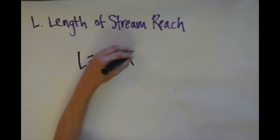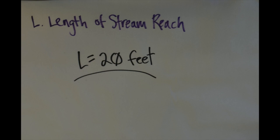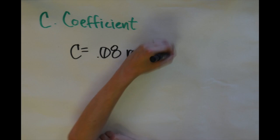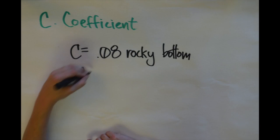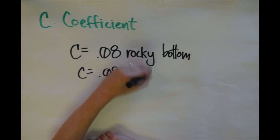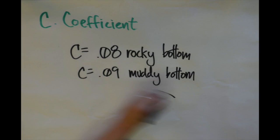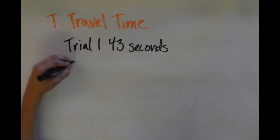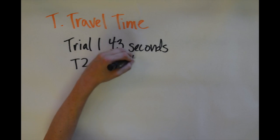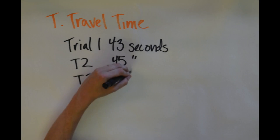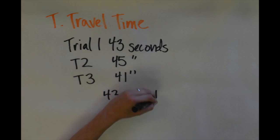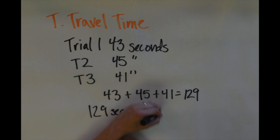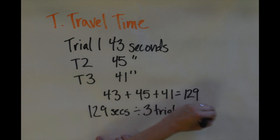Now we're going to calculate L, which is the length of the stream reach. The next part of the equation is determining the coefficient: it will be .08 if your stream has a rocky bottom, and .09 if the stream has a muddy bottom, as per the EPA guidance. Now we're going to determine the average travel time by totaling up all three of the timed runs along the stream. Total them all up, divide it by three, and you've got your average time — that figure will be T.